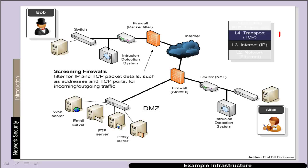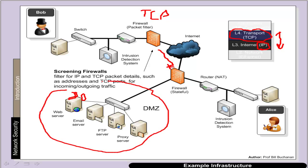At the next level we have a typical screening firewall. In this case we filter for IP network address filtering and also at the TCP or transport layer. We filter for source and destination IP addresses, and also for source and destination TCP ports. For example, a web server runs on port 80 and the firewall checks the destination port. If the service isn't allowed it can stop the port at the firewall. We would allow destination port 80 for a web server and destination port 21 for the FTP server, and so on.